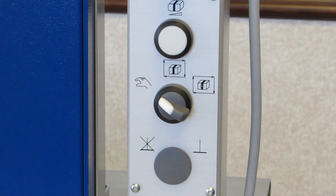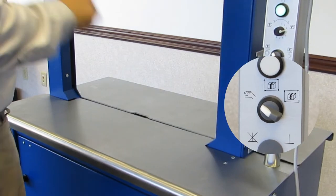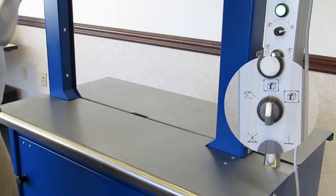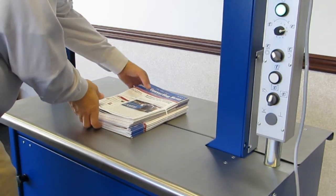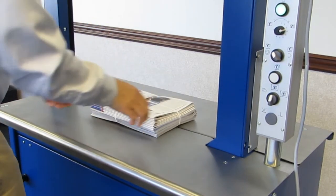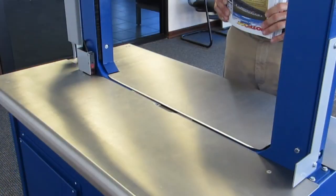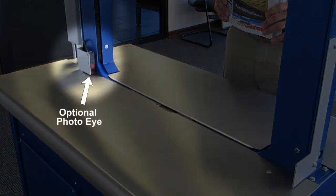To strap using the photo eye, select the appropriate strapping mode, single or continuous. In the photo single mode, one strap will be applied to the product each time the photo eye is blocked. The photo eye must be cleared before another strap can be applied.